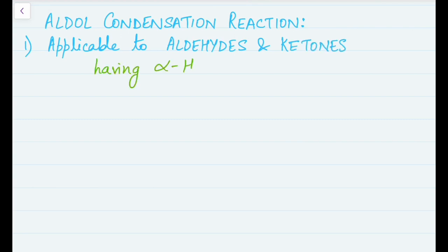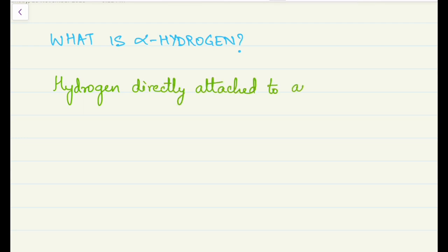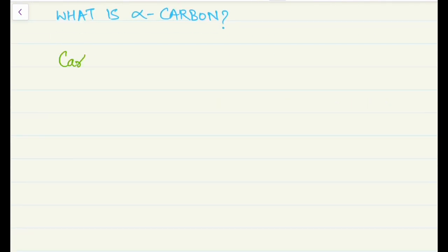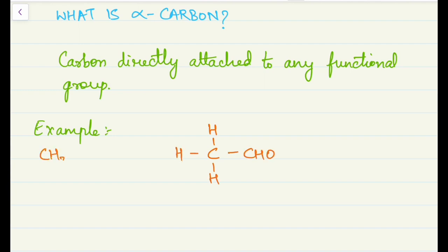There is a special condition: these aldehydes and ketones should have alpha hydrogen attached to them. What is alpha hydrogen? Any hydrogen which is attached directly to an alpha carbon becomes alpha hydrogen. The next question is: what is alpha carbon? Any carbon which is directly attached to a functional group becomes alpha carbon. We'll take the example of CH₃CHO.